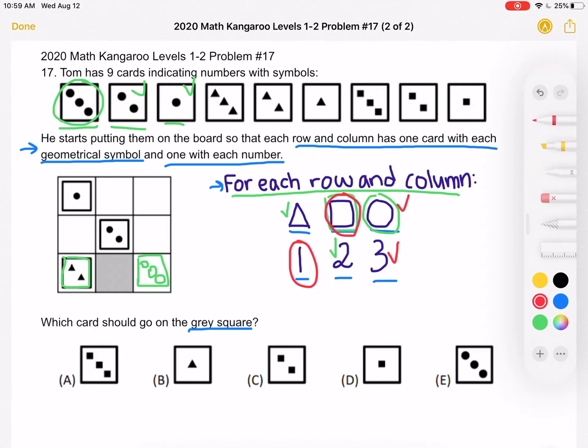And that is for this remaining column. We have to place squares, and we have to use the number one. So that means that the card over here must have one square in order to meet the requirements.